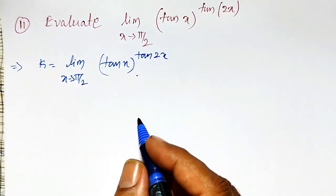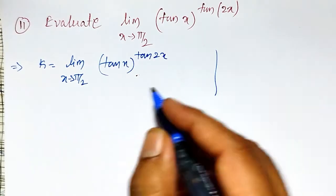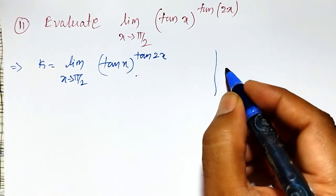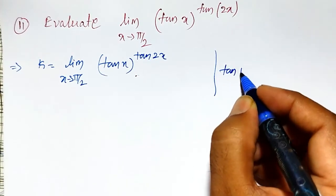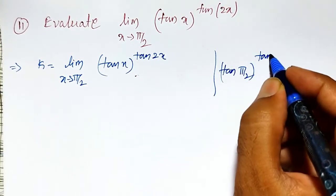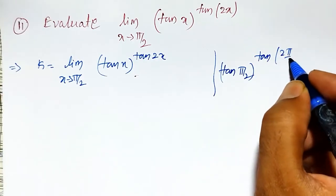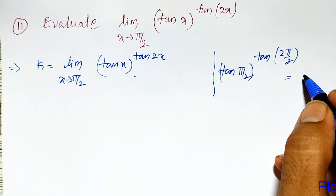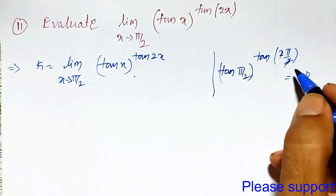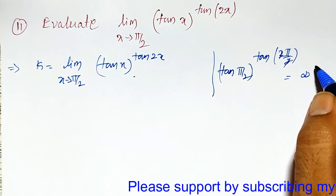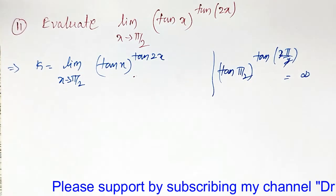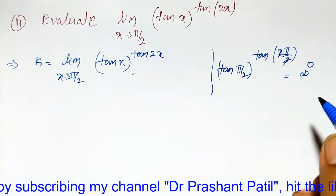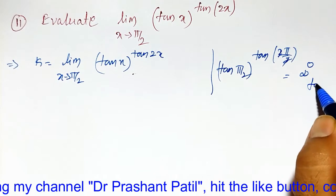Let me verify which indeterminate form it is. To verify that, I have to substitute x equal to π/2. That is tan(π/2) raised to tan(2·π/2). tan(π/2) is infinity, and tan(π) is 0. Therefore, it is the infinity raised to 0 form.